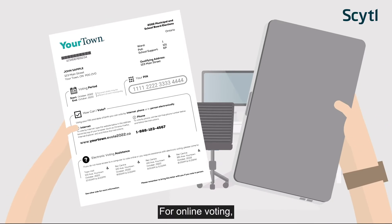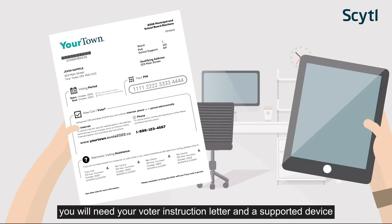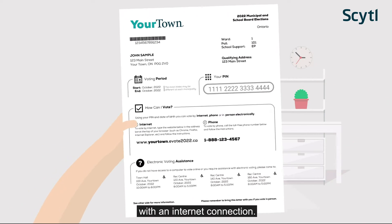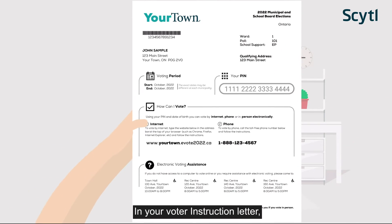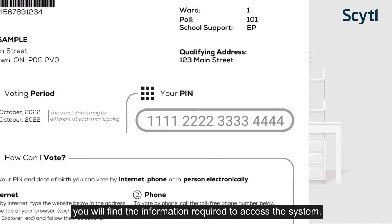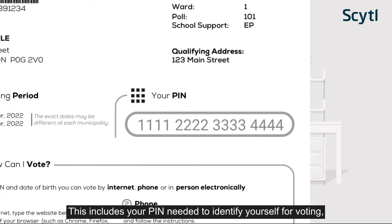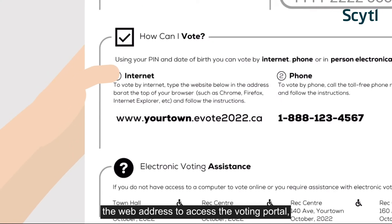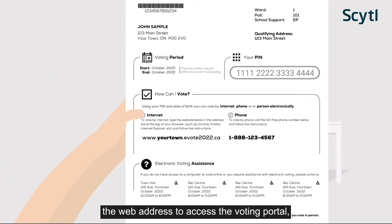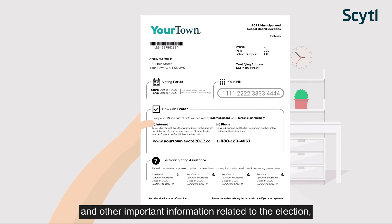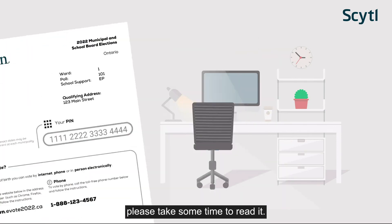For online voting, you will need your voter instruction letter and a supported device with an Internet connection. In your voter instruction letter, you will find the information required to access the system. This includes your PIN needed to identify yourself for voting, the web address to access the voting portal, and other important information related to the election. Please take some time to read it.